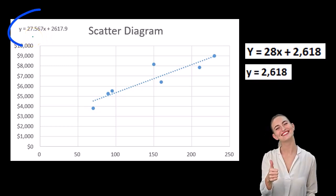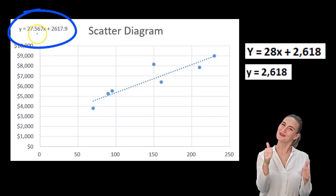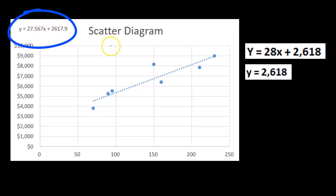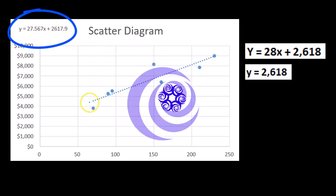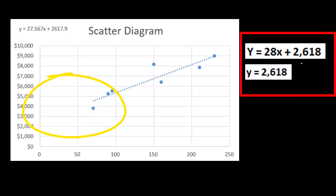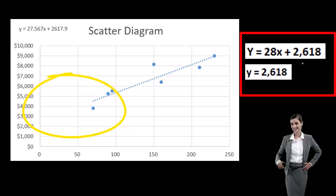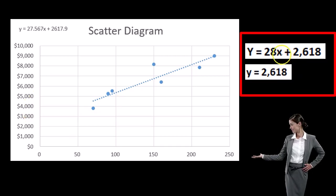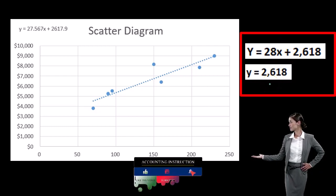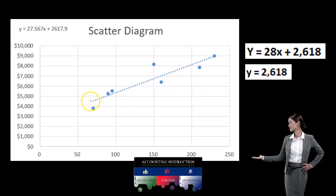Which in this case is going to be Y equals 27.567x plus 2617.9. It's not exact. Once we have that, once again, we can take that line and extend it to the vertical axis. We can use the formula to do that. Y equals 28x plus 2618. We could then make x zero and solve for y, which of course would be 2618.